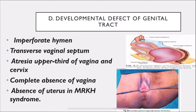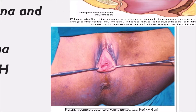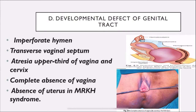Developmental defects of the genital tract: imperforate hymen completely closing the vaginal opening; transverse vaginal septum; atresia of the upper third of the vagina and cervix; complete absence of vagina; and absence of uterus in MRKH (Mayer-Rokitansky-Küster-Hauser) syndrome. In MRKH syndrome, the external genitalia is normal but the uterus and vagina are absent.